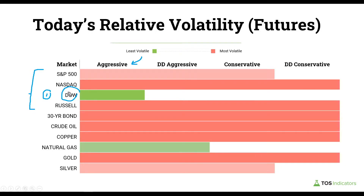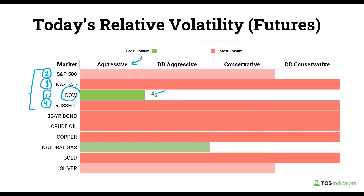If we divide the rest into groupings — looking at the indices — the Russell and the Nasdaq both breached their doomsday conservative models, with the Russell going a little bit deeper than the Nasdaq. The S&P 500 meanwhile only hit its conservative model. So in terms of rank, I'd give S&P number two, Nasdaq number three, and Russell number four.